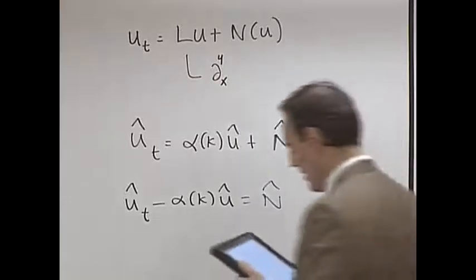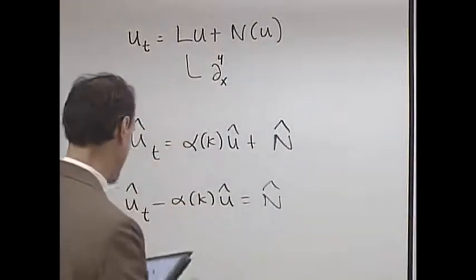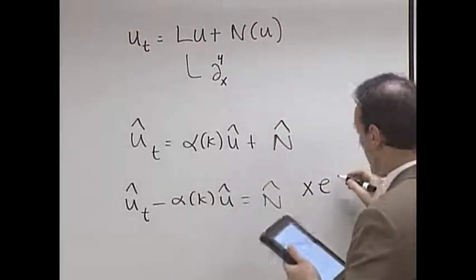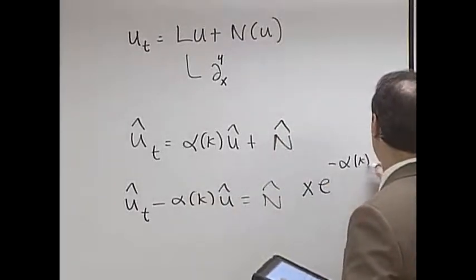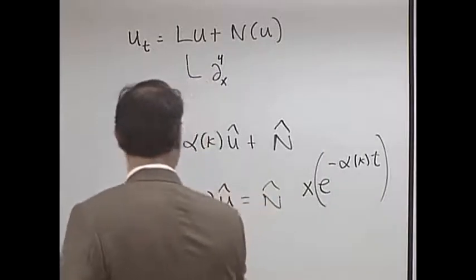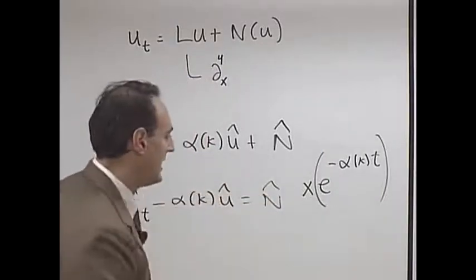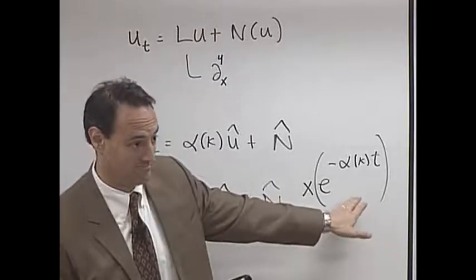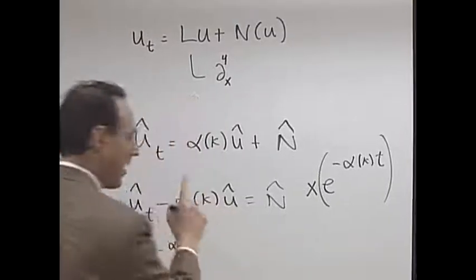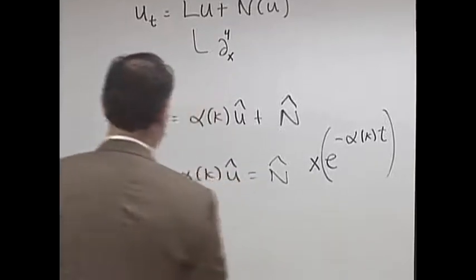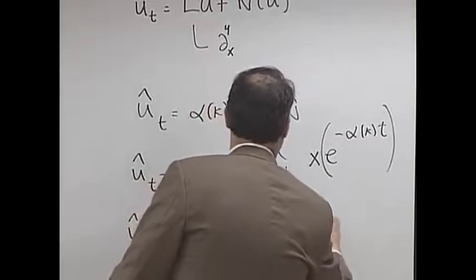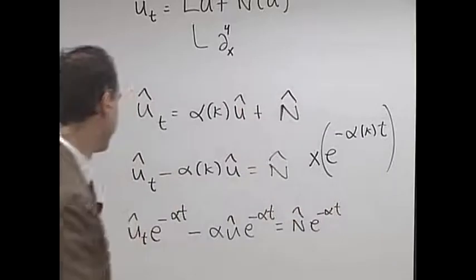So here's what I'm going to do. I'm going to multiply everything, this whole equation, by e to the minus α(k)t. Start with that. And by the way this is like my μ that I just had before. What do I get? I get û_t e^(-αt) - I'm going to drop the k for a moment but remember it's a function of k.